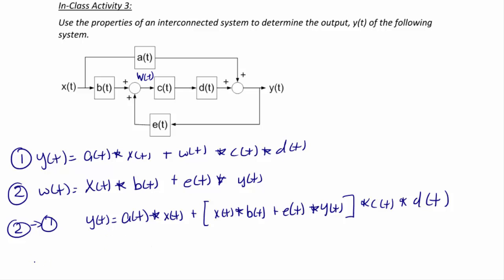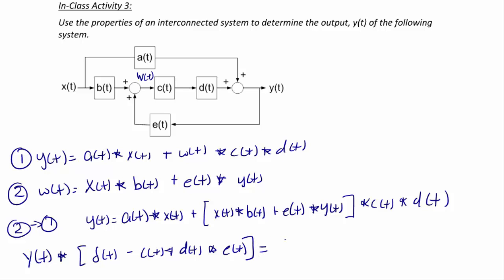Moving all terms involving y(t) to the left side, we get y(t) convolved with the quantity in brackets: delta(t) minus c(t) convolved with d(t) convolved with e(t), equals x(t) convolved with the quantity a(t) plus b(t) convolved with c(t) convolved with d(t).